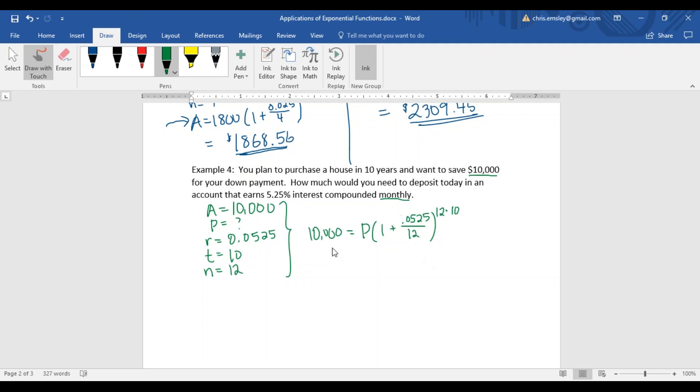I will caution you when you do a problem like this on your calculator. It's tempting to do this step at a time and then round your answer. Try not to round your answer until the very end. If you can, we'll solve for P dividing both sides by this big exponential part. 12 times 10 is 120.